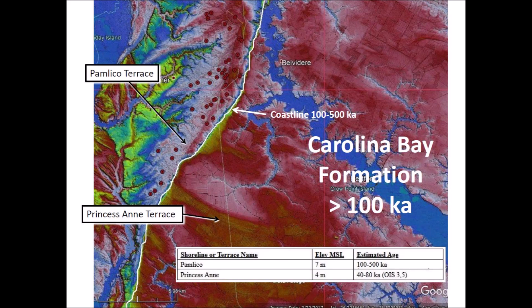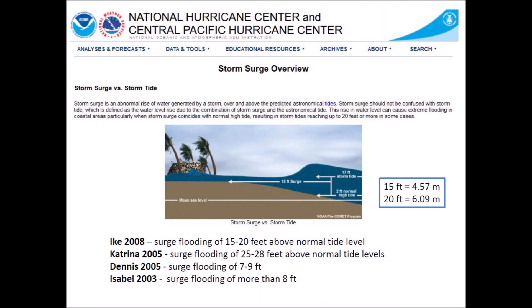The conclusion seems obvious, but nothing about the Carolina Bays is so simple. The National Hurricane Center says that when a storm surge coincides with a normal high tide, the resulting storm tide can be 20 feet or higher. The Princess Anne Terrace at 4 meters elevation can be flooded easily by storms that frequently batter the Atlantic coast. A 15-foot storm surge would inundate the Princess Anne Terrace with half a meter of seawater, and a 20-foot storm tide would cover it with 2 meters of seawater — deep enough to stir up sand and erase all traces of Carolina Bays.